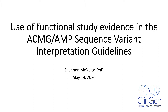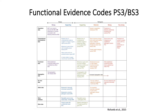If you would like a more general introduction to functional studies, please view the video entitled Introduction to the Use of Functional Studies in Clinical Variant Interpretation, available on the ClinGen YouTube channel. In the ACMG AMP sequence variant interpretation framework, the PS3 and BS3 codes refer to well-established functional studies showing either a deleterious effect or no deleterious effect on the gene or gene product.